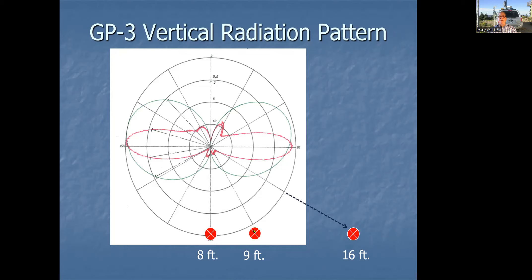What happens as you move out a little bit from directly below? You've added a little distance but have a little less pattern attenuation — maybe 8 or 9 dB down from published gain. Moving further out to 16 feet, you've got one-fourth the field density on distance alone, plus you still have negative gain from that pattern — maybe 5 dB down from the 2.5 dB published gain.